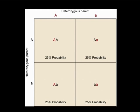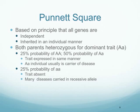This helps us identify probabilities for each offspring. Each child born will have a 25% probability of having both recessive genes, a 25% probability of having both dominant genes, and a 50% probability of having one dominant and one recessive gene. The Punnett square is based on the principle that all genes are independent and inherited in an individualized manner, and each child gets their own Punnett square.